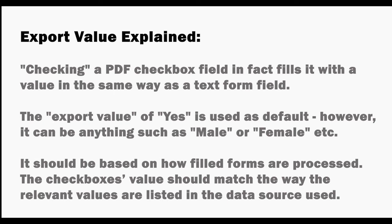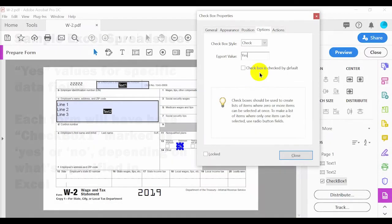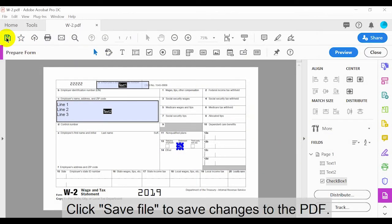The export value of Yes is used as default, but it can be anything, such as male or female. It should be based on how filled forms are processed. The checkbox's value should match the way the relevant values are listed in the data source. For example, in a sample Excel spreadsheet, each form will have Checkbox 1 marked as Yes or No depending on what's specified in Excel. Click Save File to save changes to the PDF.